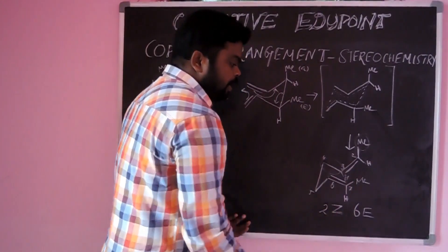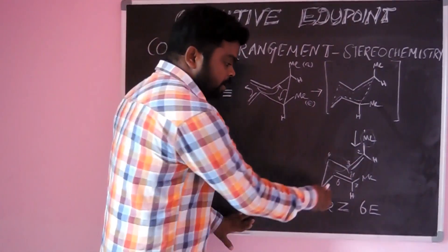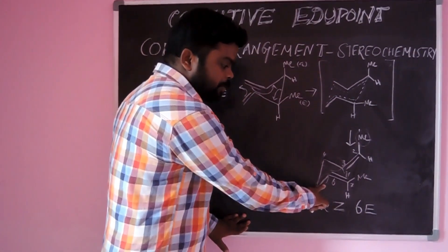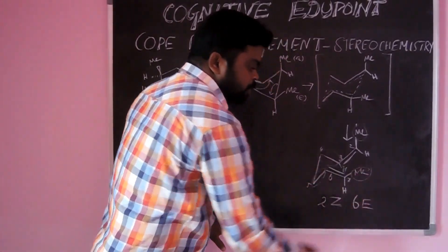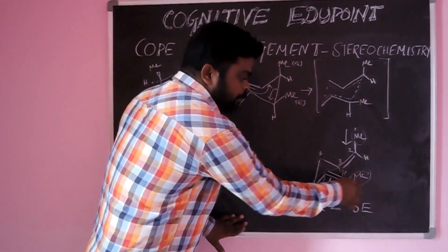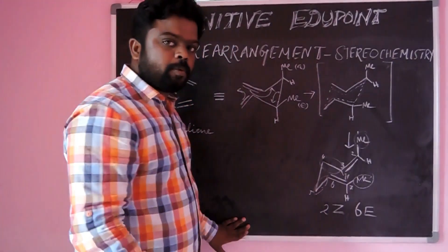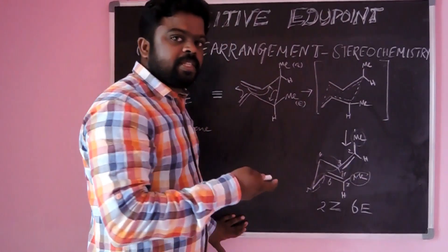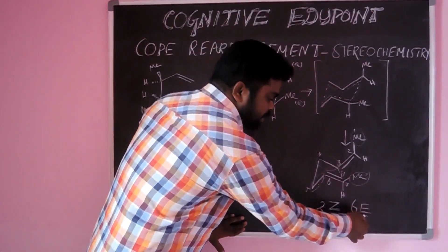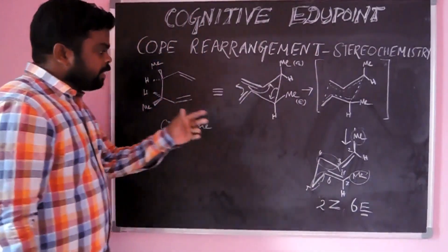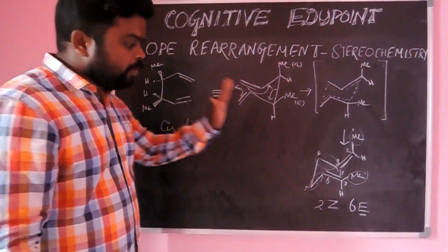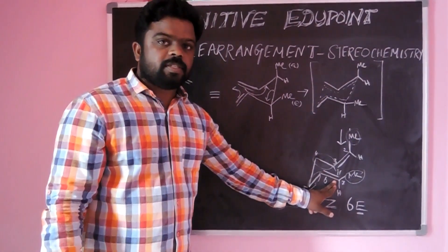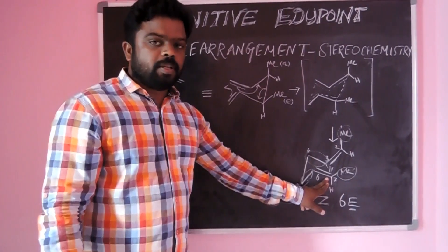Z means cis-position because here the methyl group and the carbon group are present on the same side — same side means cis, which means Z. So that is 2Z. And at the sixth carbon, another double bond is present. The methyl group and the carbon chain are on opposite sides of each other, which means this is the E form. So that is 6E. Therefore, if we take a cis-diene compound like this, we get a cis and trans product (2Z,6E). This is the stereochemistry of Cope rearrangement.